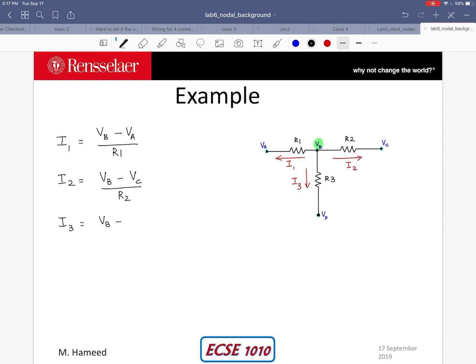VB minus VD divided by R3 and using KCL I know that sum of all the currents at node B is going to equal 0.